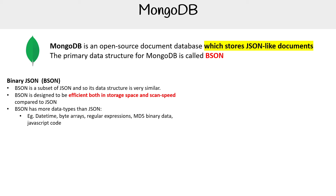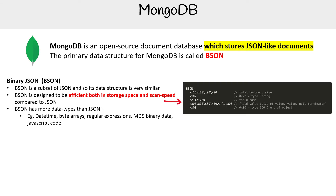Because BSON has all these additional data types and it's stored in a binary format — not plain text, it's actually binary data — that's the reason why the storage space and scan speed is so fast.